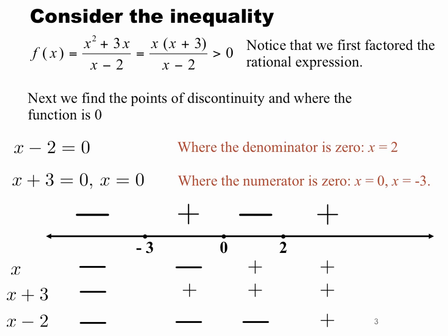So if you look at our sign line, which is our number line that has been separated into four pieces because of the three critical values we found, we know exactly where on the number line our rational expression, f of x equals x squared plus 3x over x minus 2, is greater than 0, equal to 0, and less than 0.